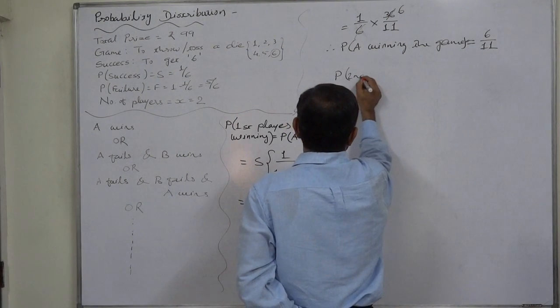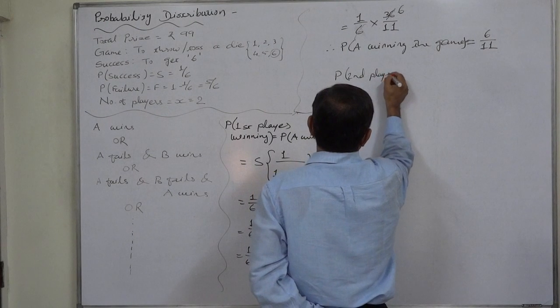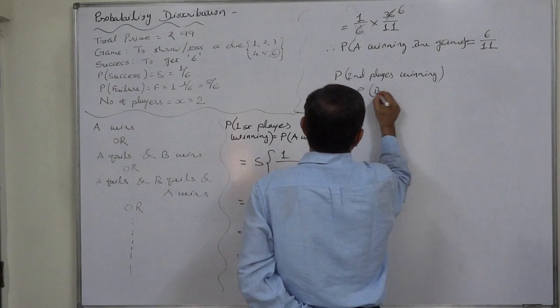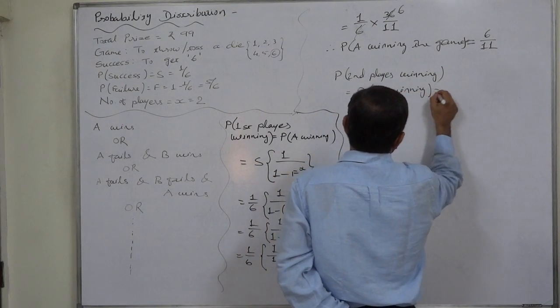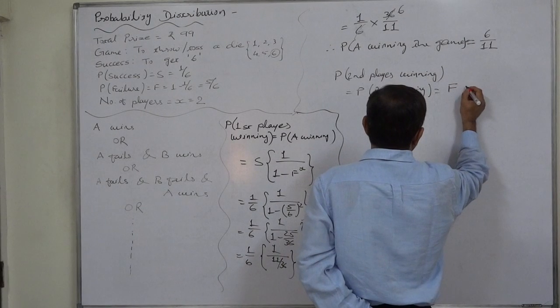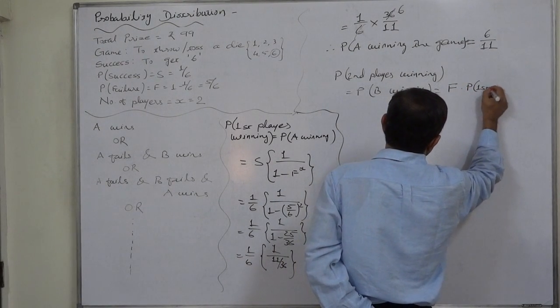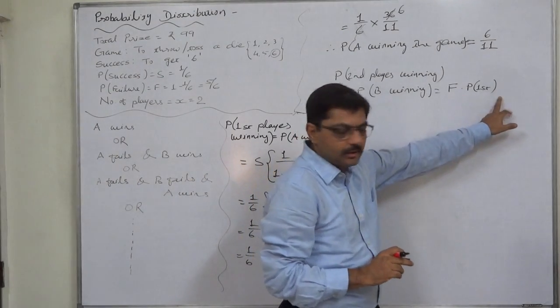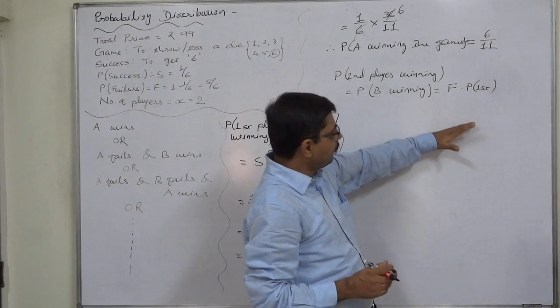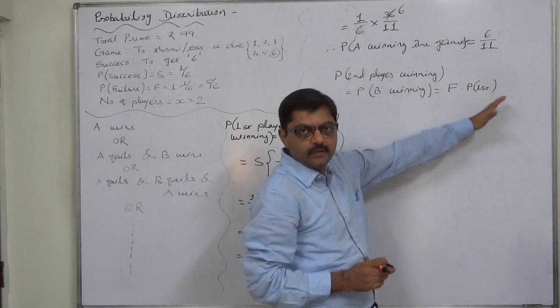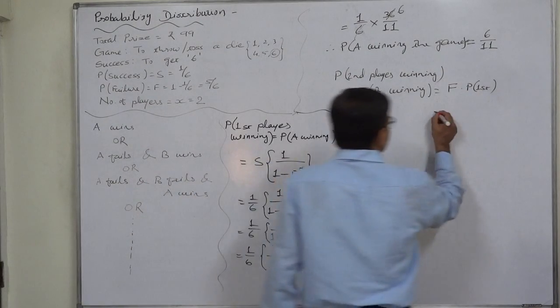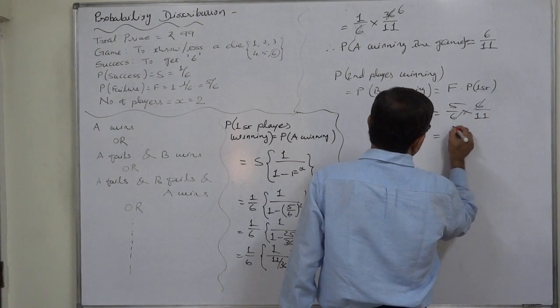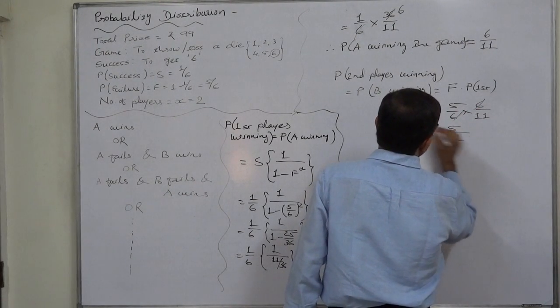The probability of second player winning the game is actually probability of B winning the game. That is nothing, F into probability of first player. In case of the third player, it will be F into F into probability of first player. In case of fourth player, it will be F into F into F into probability of first player. So it is 5 by 6 into 6 by 11. Hence it comes to 5 by 11.